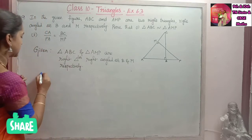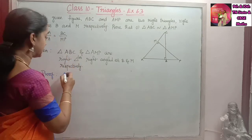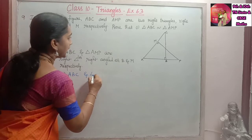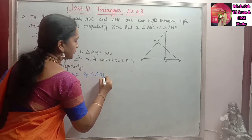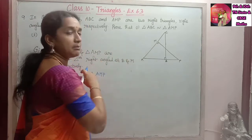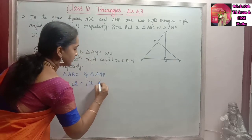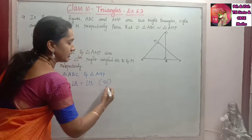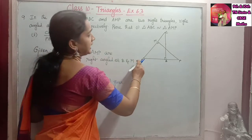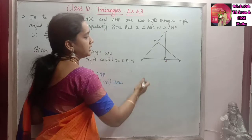Then we will give the proof for this. We will consider two triangles: triangle ABC and triangle AMP. In these triangles, it is already given in the question that angle B and angle M are right angles. So angle B is equal to angle M, which equals 90 degrees — it is given in the question.